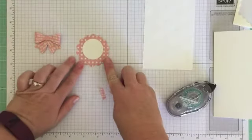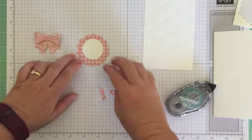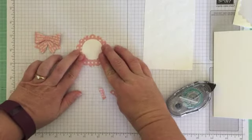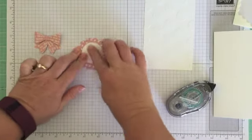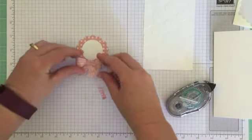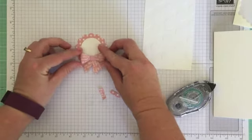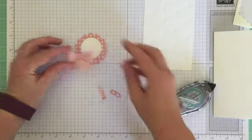Okay, and then what we're going to do is we're going to pop that in the middle. Now I am going to put it up slightly so it's not exactly in the middle and that's just simply because I want to put the bow on the bottom here like this.